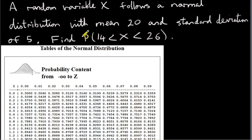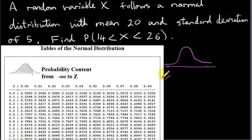A random variable X follows a normal distribution with mean 20 and standard deviation of 5. A random variable X takes on values that can be anywhere along this line here. It takes on those values with certain probabilities, or ranges of values with certain probabilities. And that probability distribution is given by this shape here.